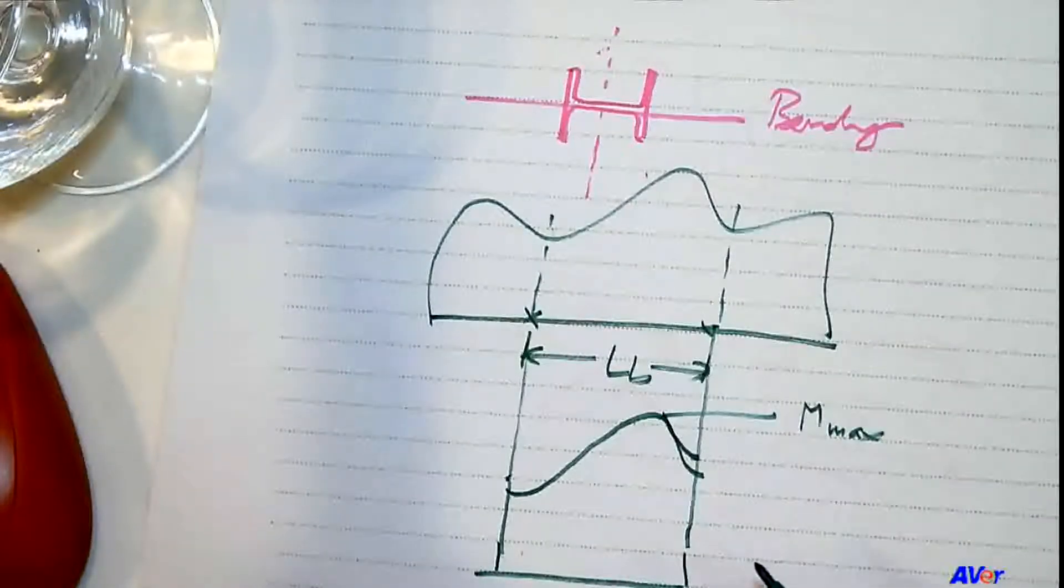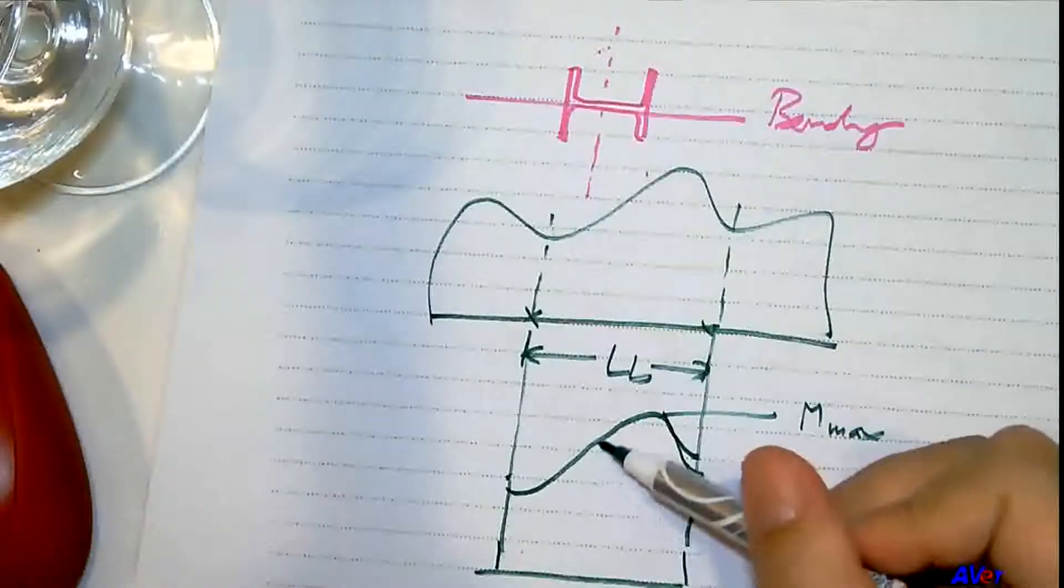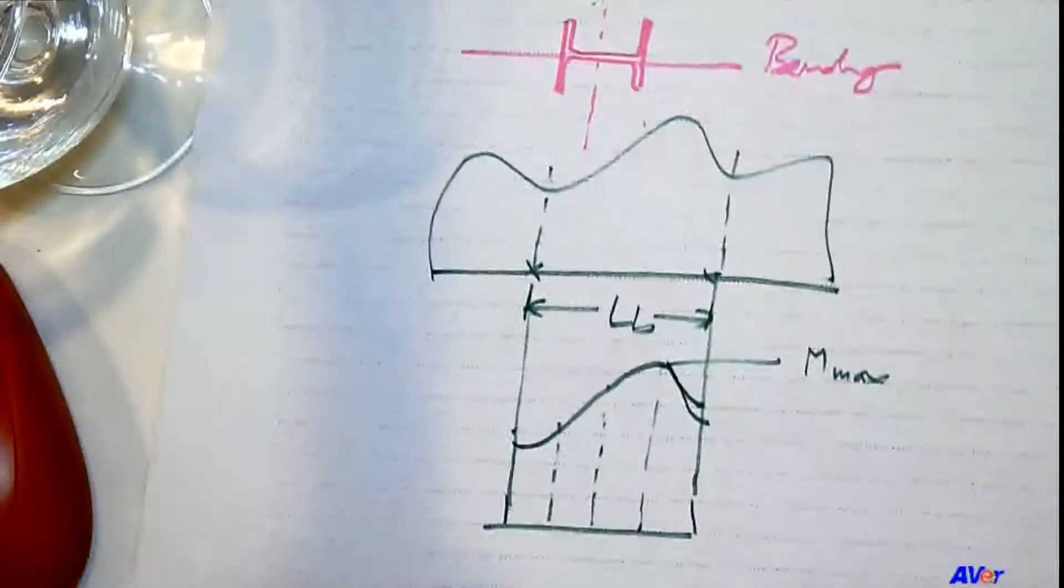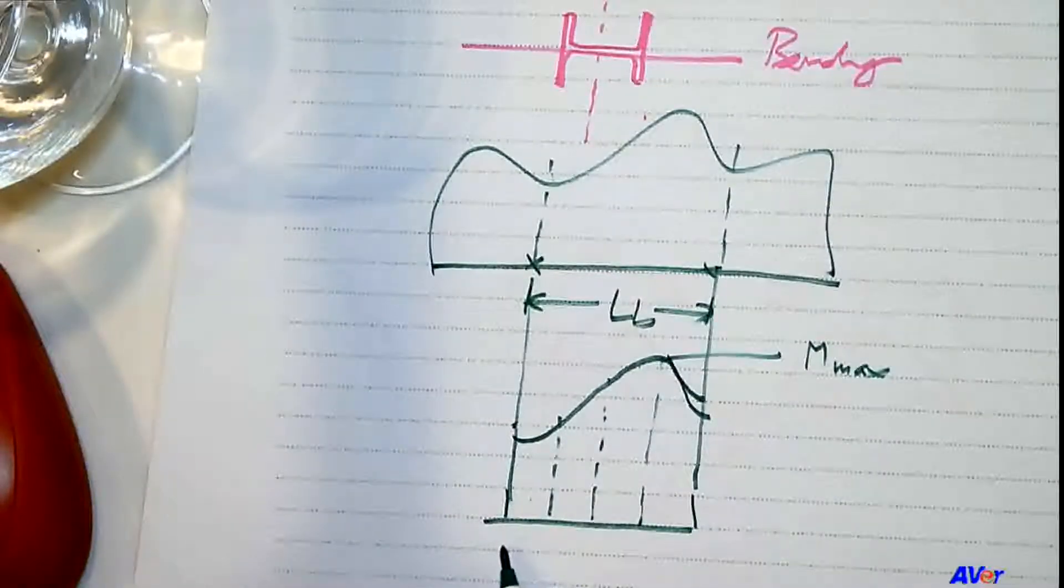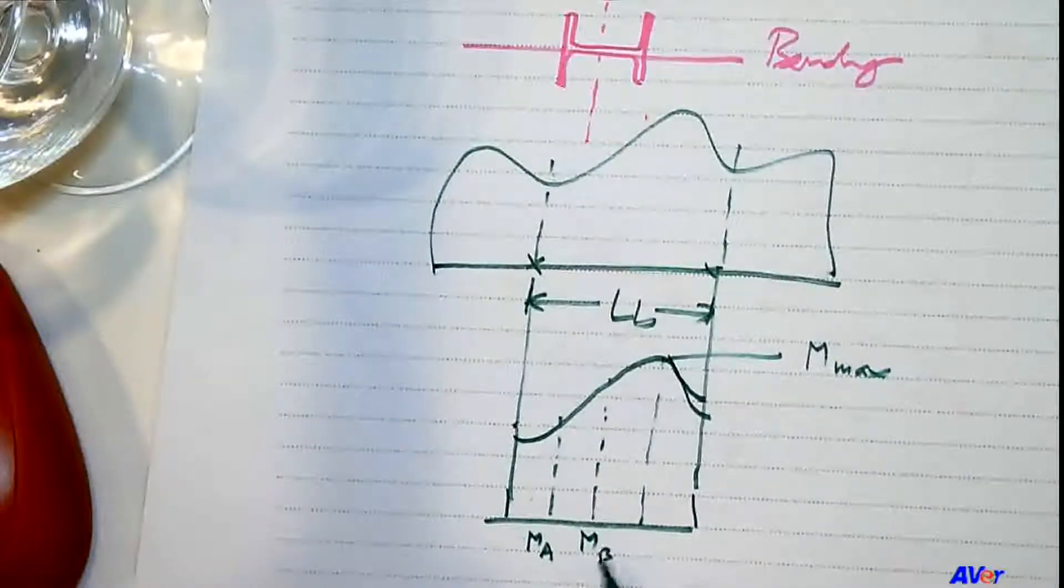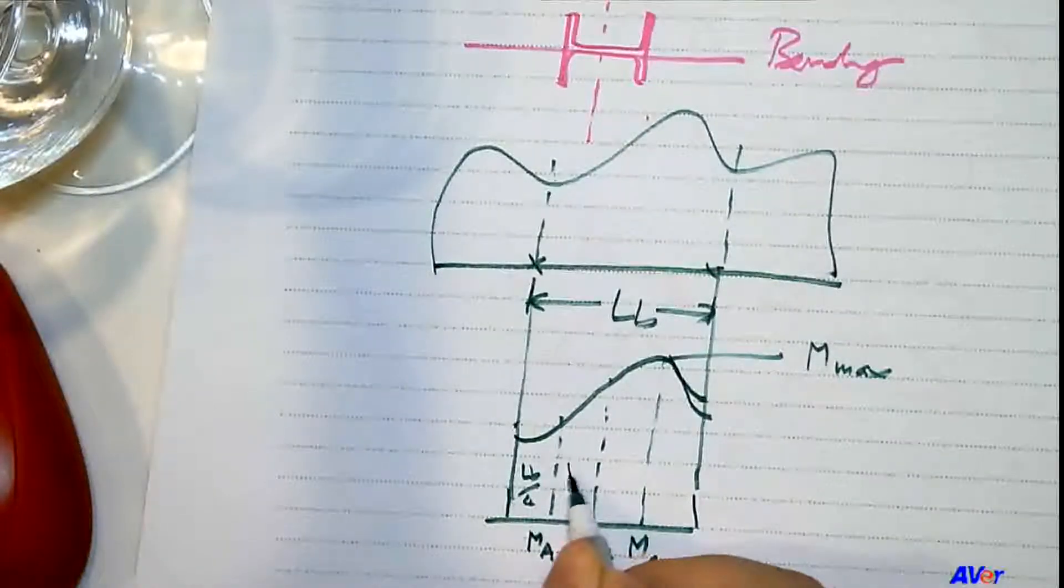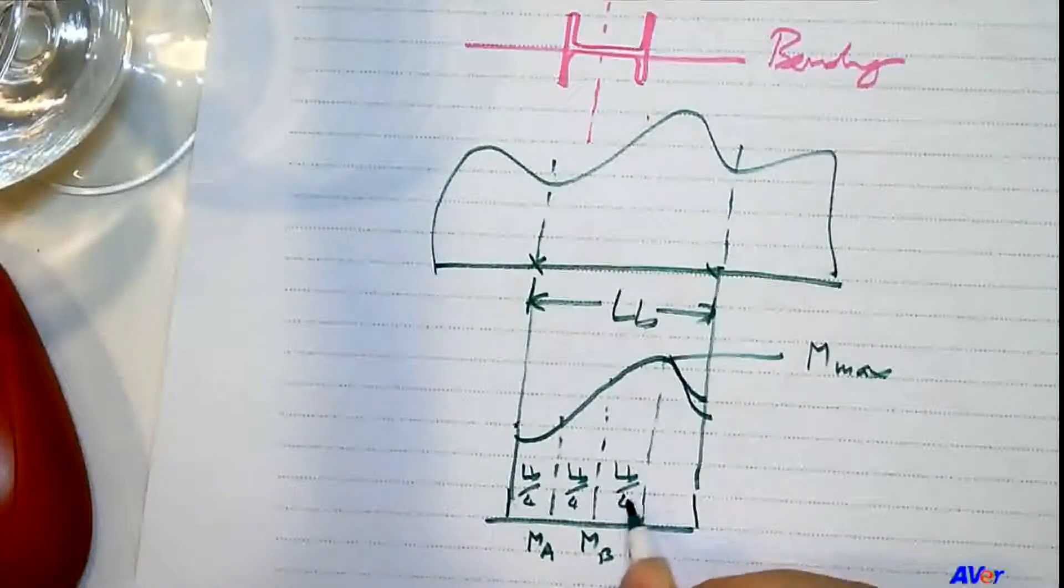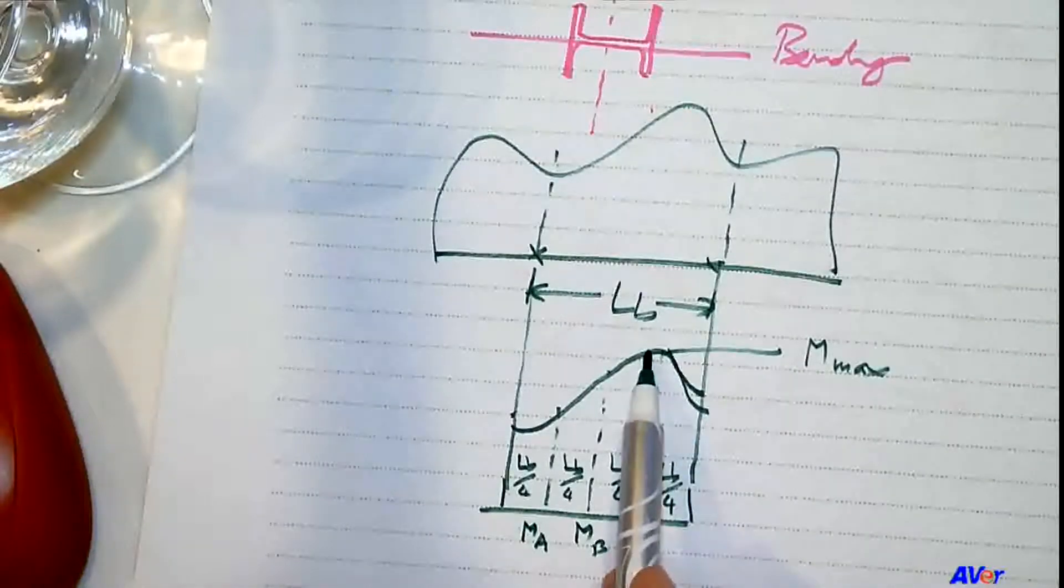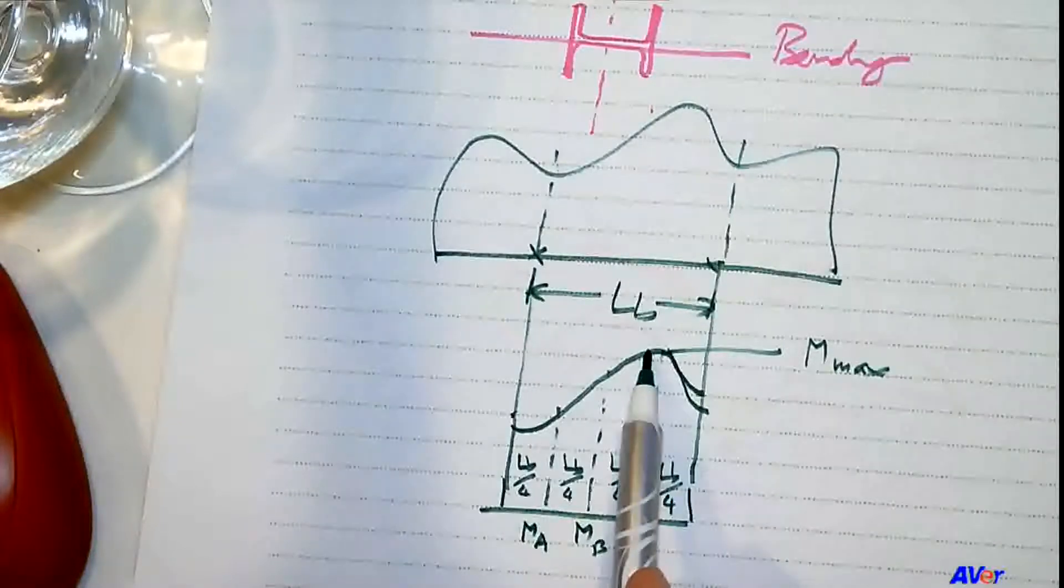And then we have MA, MB, and then MC in the formula. MA, MB, and MC are the values at the quarter point. That means we divide this portion into four equal spaces. And then MA is the value there, MB is the value there, and MC is the value there. And that is Lb over four. Lb over four. Lb over four. And then Lb over four. The Mmax can be anywhere. It's just the maximum value of bending moment of that particular unbraced length.